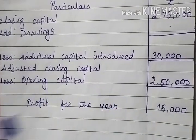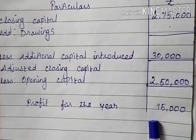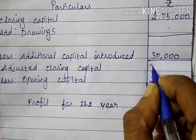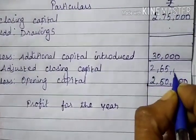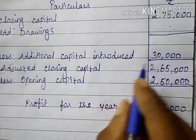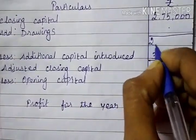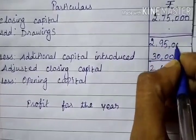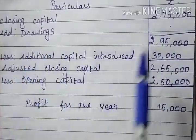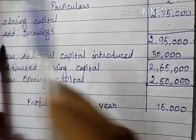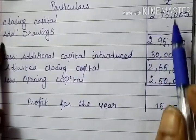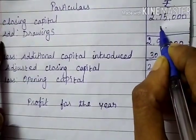Same procedure: profit 15,000 plus opening capital 2,50,000 equals 2,65,000. Then 2,65,000 plus additional capital 30,000 equals 2,95,000. The missing information is drawings. Since drawings are added in the format, we do the opposite — subtract. So 2,95,000 minus closing capital 2,75,000 equals 20,000. Drawings equals 20,000.